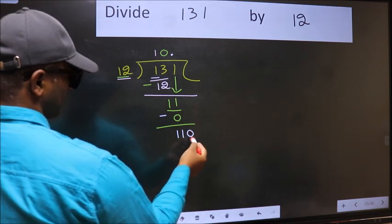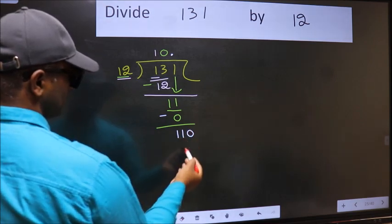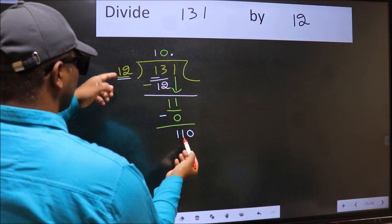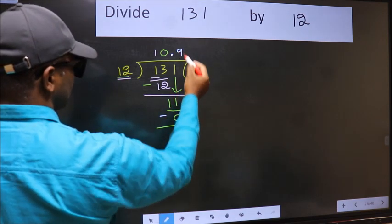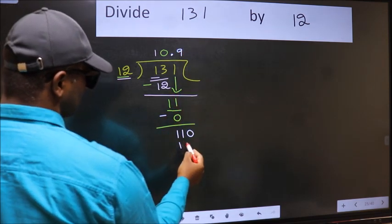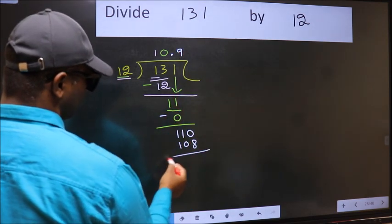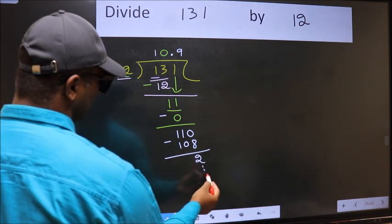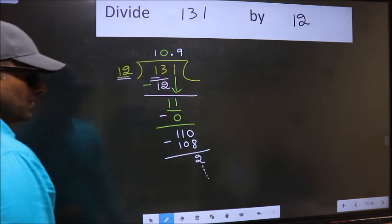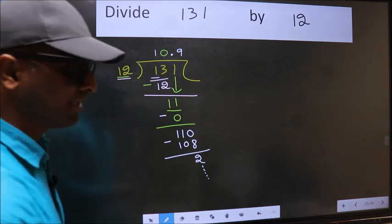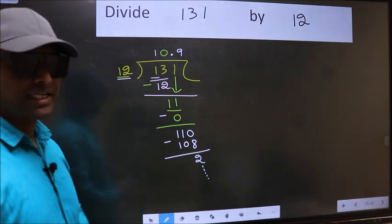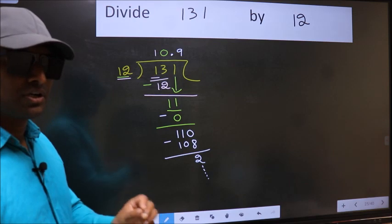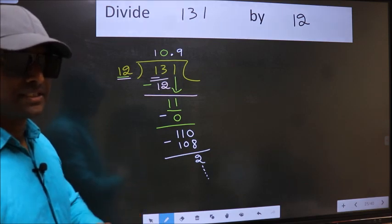So we have 110. A number close to 110 in the 12 times table is 12 times 9 equals 108. Subtract and you get 2, then continue the division. Did you understand where the mistake happens? You should not make that mistake.